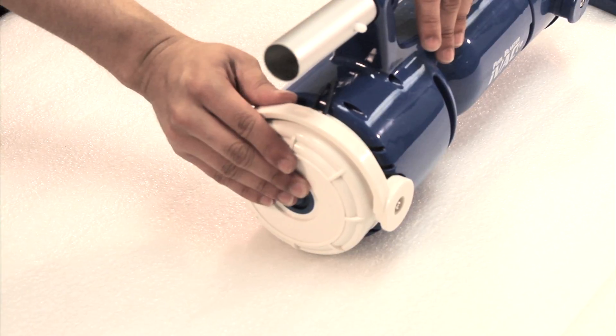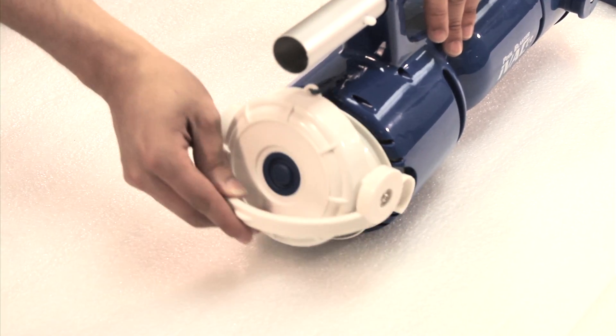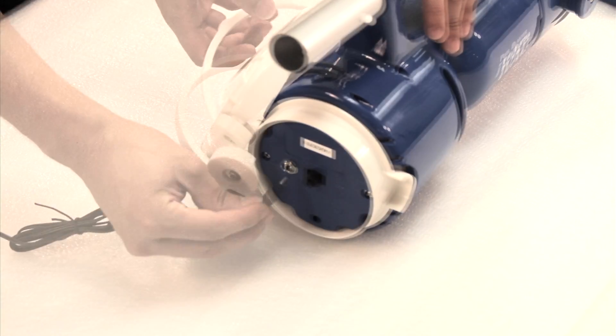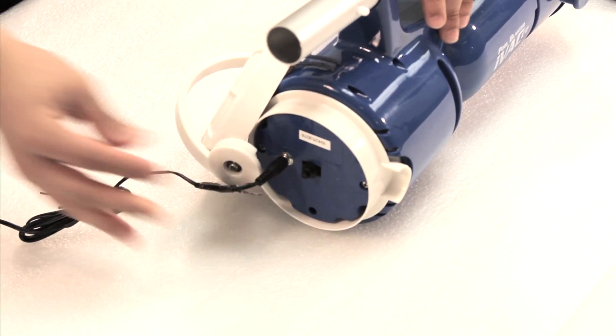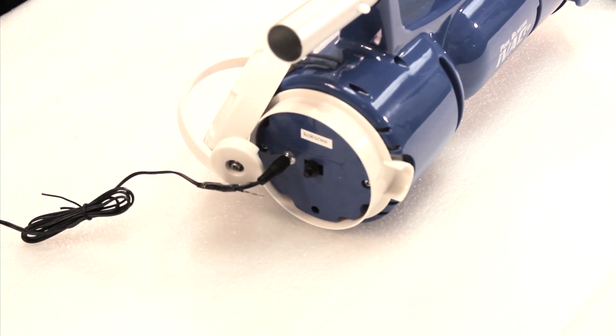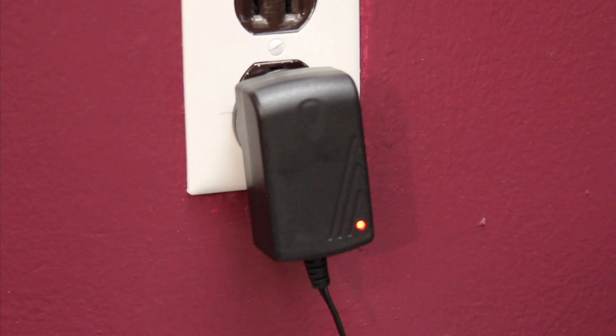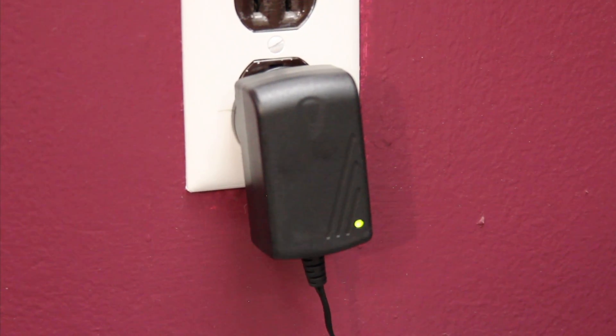To recharge the vacuum, remove the easy snap locking cap and insert the 4 hour quick charger. Your vacuum will be fully charged in just 4 hours. Once charged, the light on the charger turns from red to green.